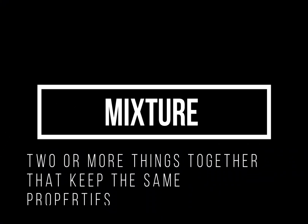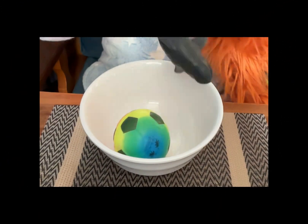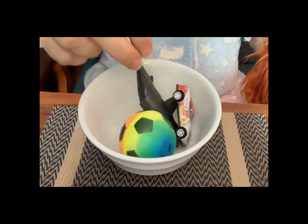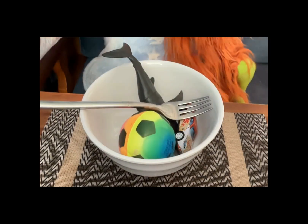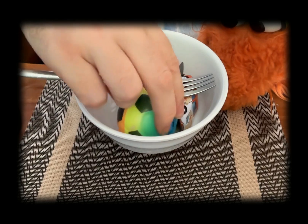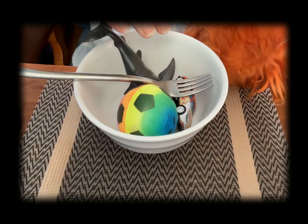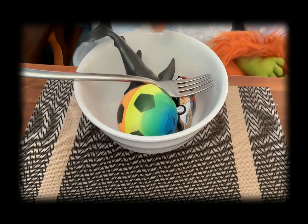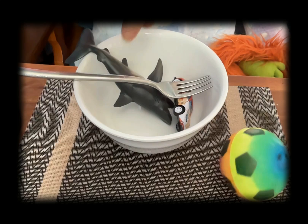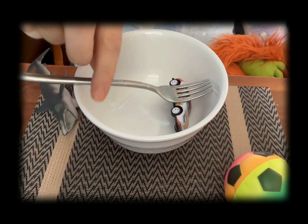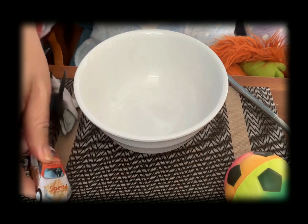Let me make a mixture. In our mixture, my ball is still soft. And even with some misbehaviour, I can separate the things in my mixture. So, in a mixture, our objects keep their same properties, and they are easy to separate.